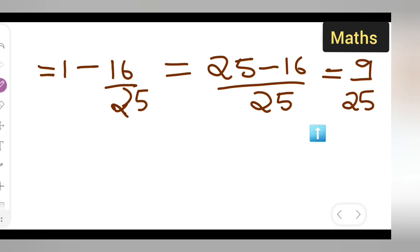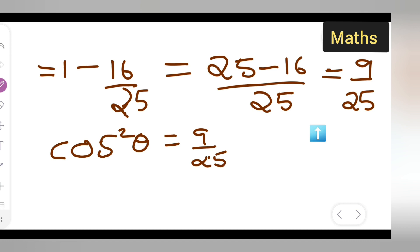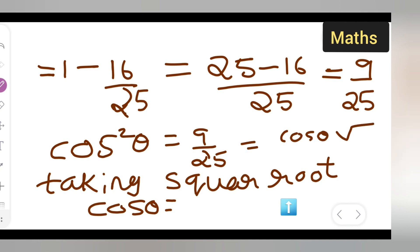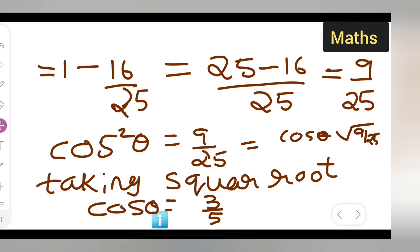So cos square theta is equal to 9 upon 25. Now taking the square root of both sides: cos theta equals the square root of 9 upon 25. The square root of 9 is 3 and the square root of 25 is 5, so cos theta equals 3 upon 5.